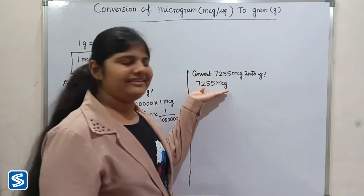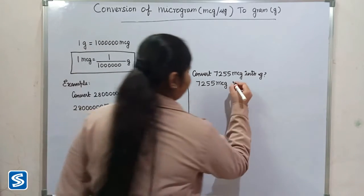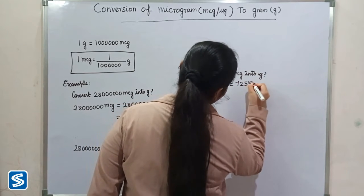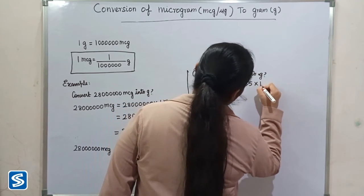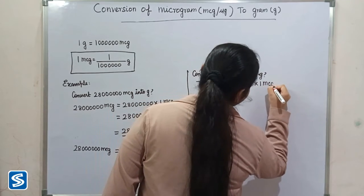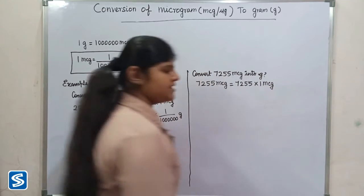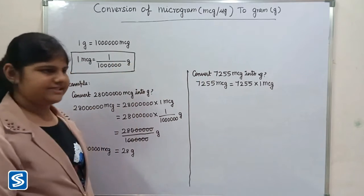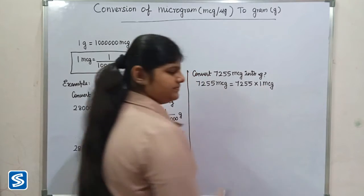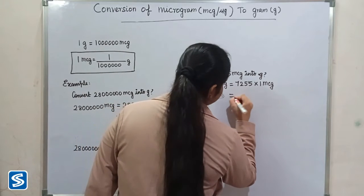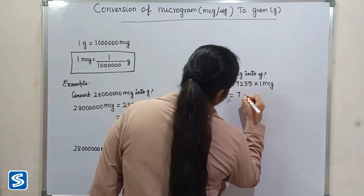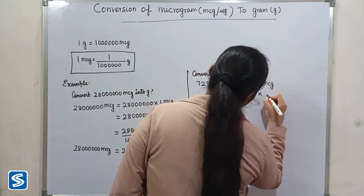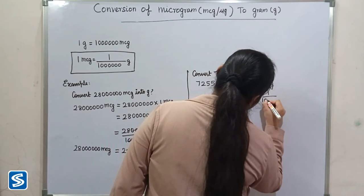Seven thousand two hundred and fifty-five micrograms can be written as seven thousand two hundred and fifty-five multiplied by one microgram. Now we have to substitute one by one million grams in the place of one microgram. So we get seven thousand two hundred and fifty-five multiplied by one by one million grams.